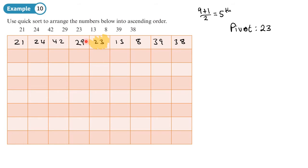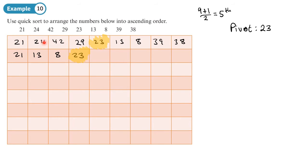We move any values smaller than 23 over to the left next to the pivot, and any values larger than 23 over to the right next to the pivot. The 13 and 8 move across to the left of 23. The 21 remains on the outside left. On the right, 24, 42, and 29 pivot across next to 23.